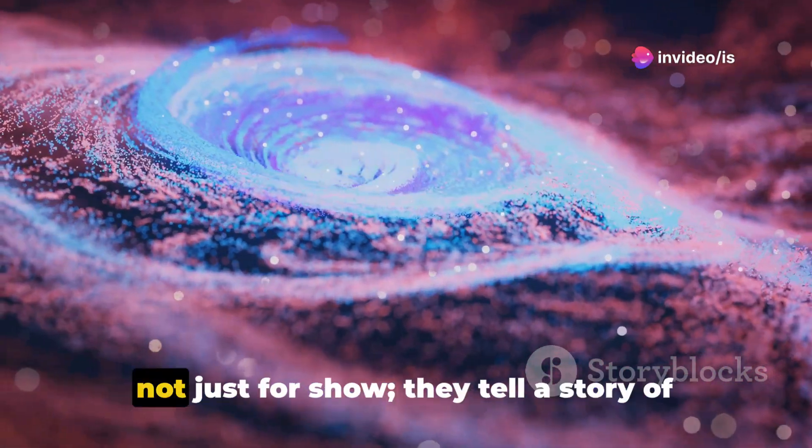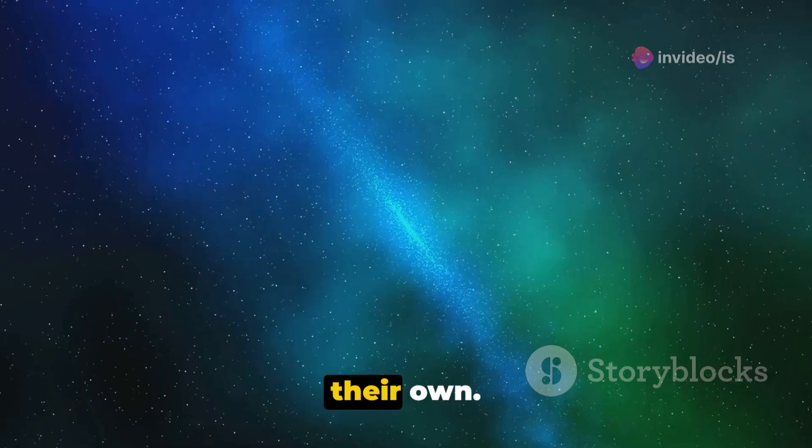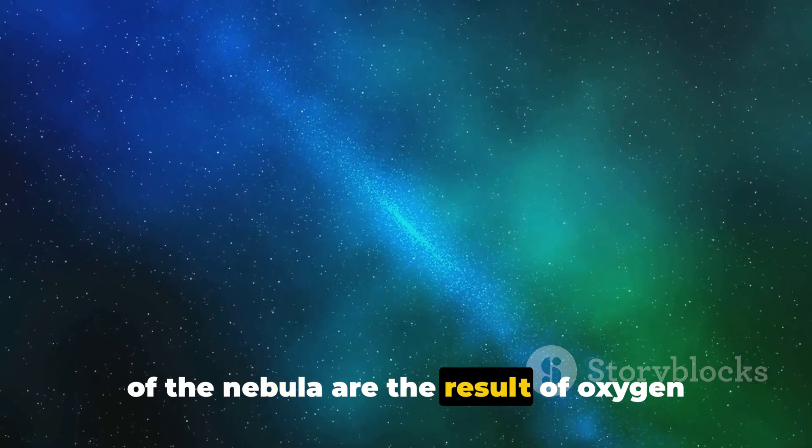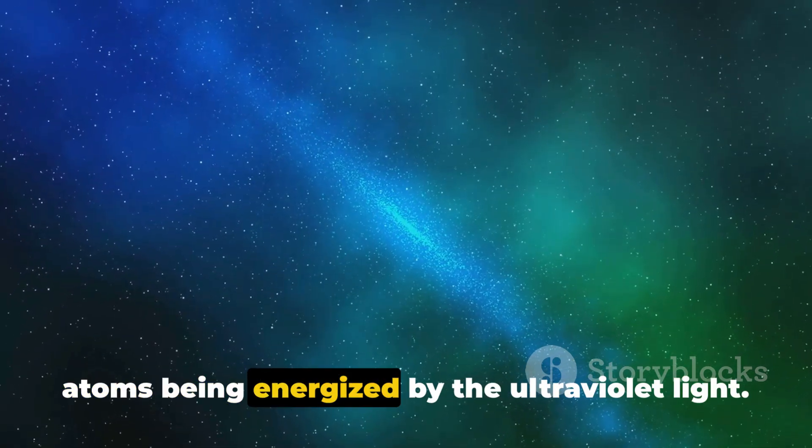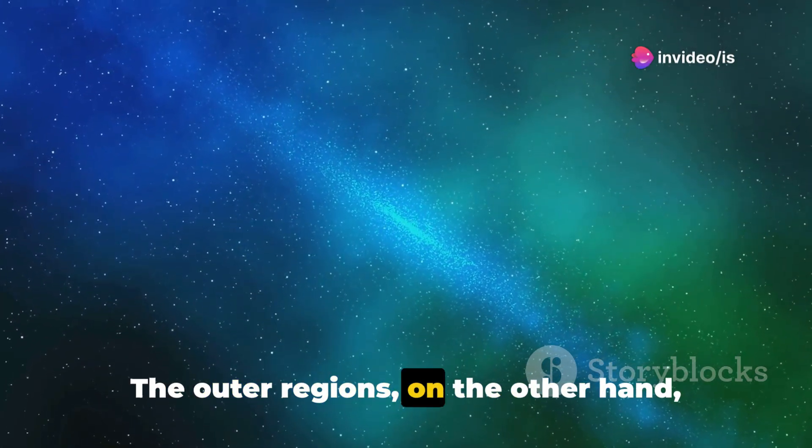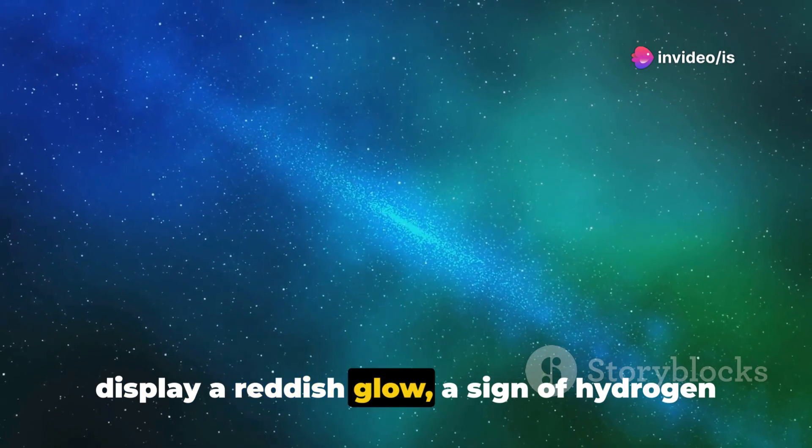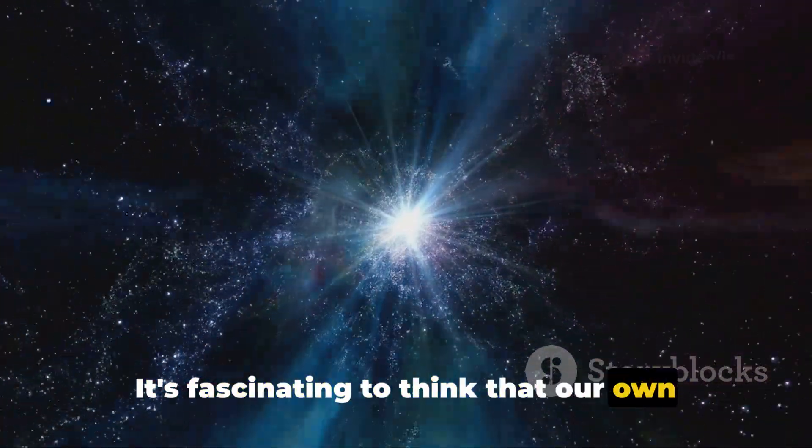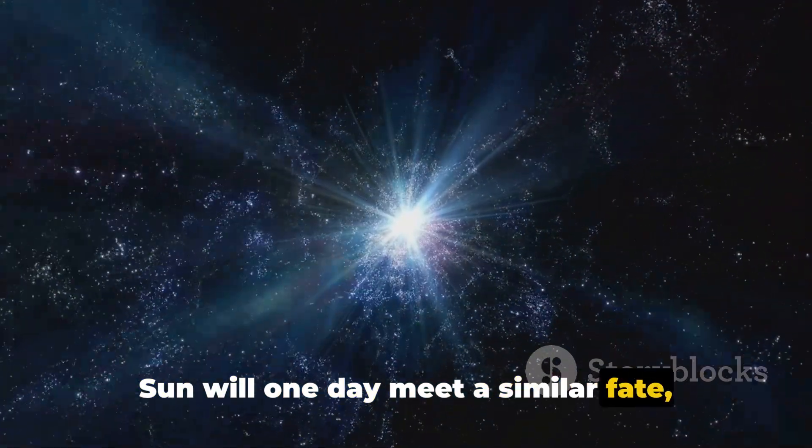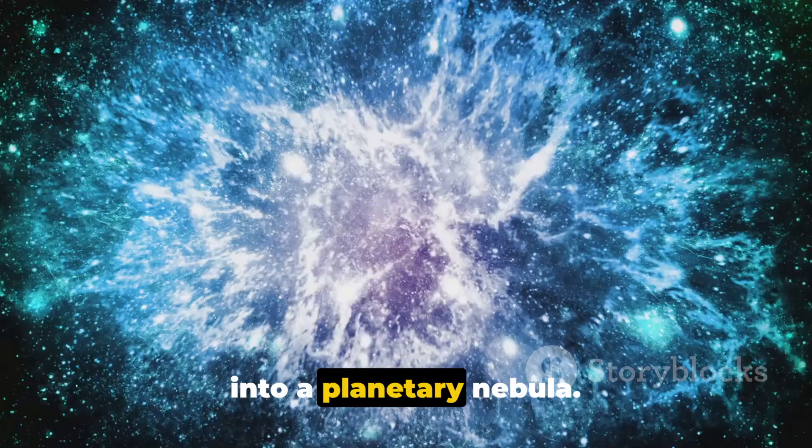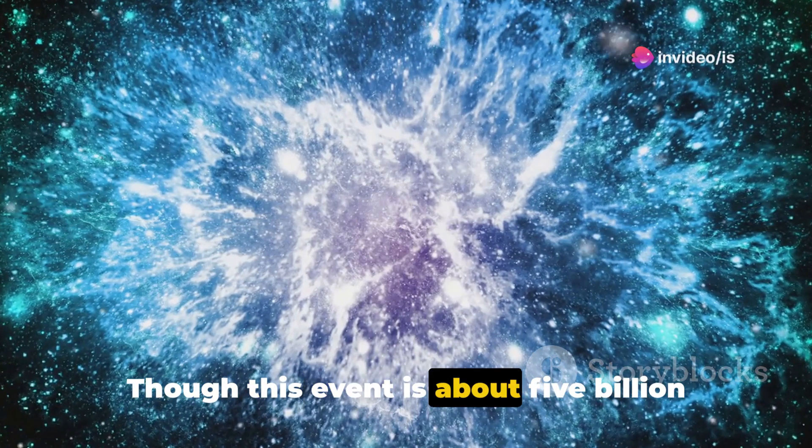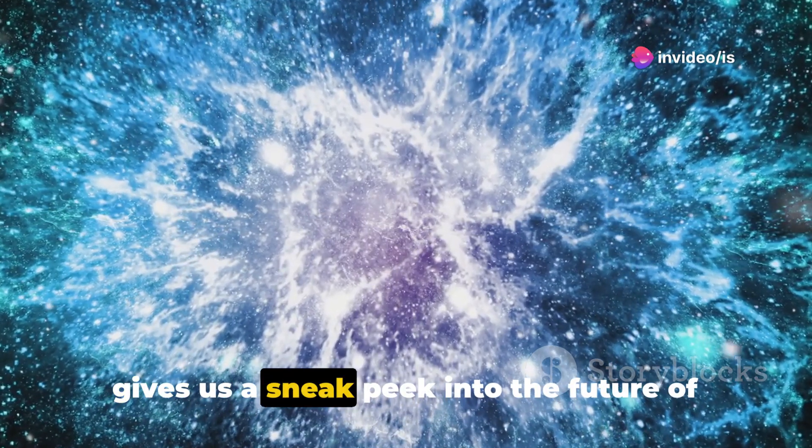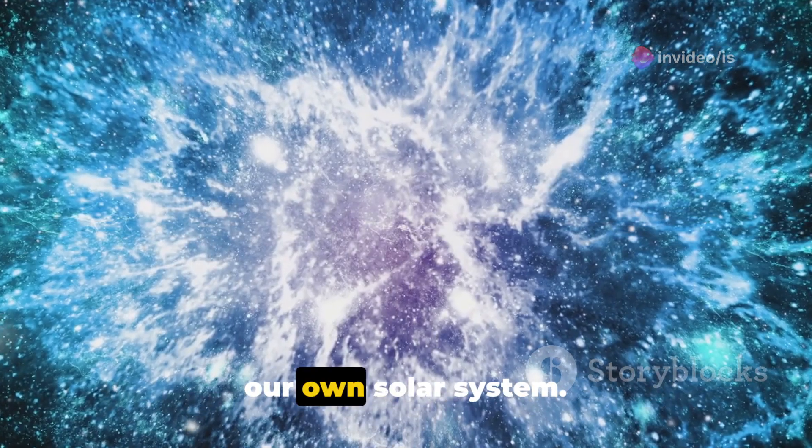The colors we see in the Helix Nebula are not just for show, they tell a story of their own. The blue-green hues in the inner regions of the nebula are the result of oxygen atoms being energized by the ultraviolet light. The outer regions, on the other hand, display a reddish glow, a sign of hydrogen and nitrogen. It's fascinating to think that our own sun will one day meet a similar fate, shedding its outer layers and morphing into a planetary nebula. Though this event is about 5 billion years away, observing the Helix Nebula gives us a sneak peek into the future of our own solar system.